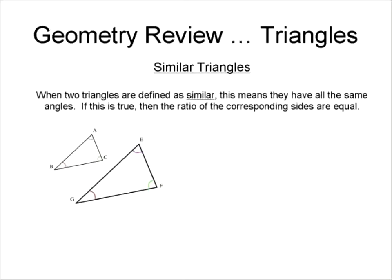Let's look at our triangles in a little more detail. We're going to review similar triangles. If two triangles are similar, this means that they have all of the same angles — the corresponding angles are the same.